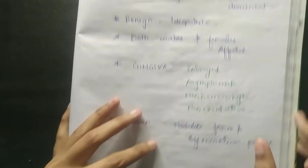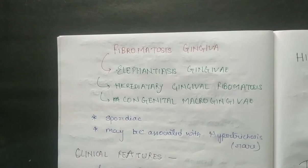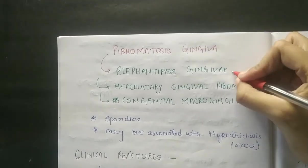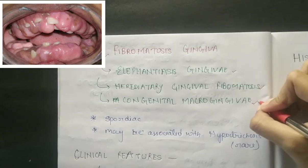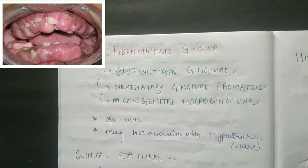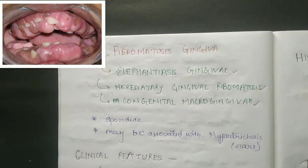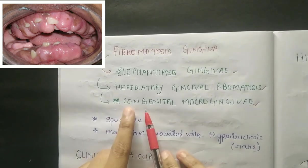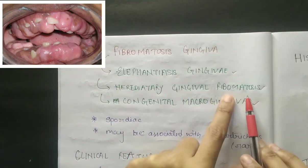Now coming to fibromatosis gingiva. It is also called elephantiasis gingiva, hereditary gingiva, and congenital macrogingiva. All these names are justified - elephantiasis gingiva refers to enlargement, and congenital macrogingiva also called hereditary gingiva fibromatosis. So these are the three other names for fibromatosis gingiva.